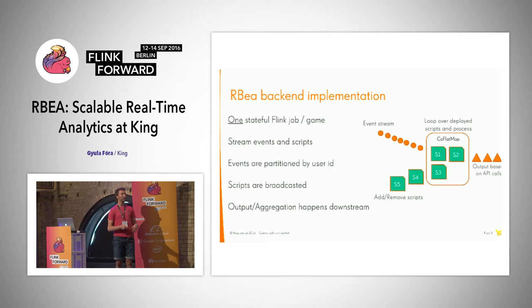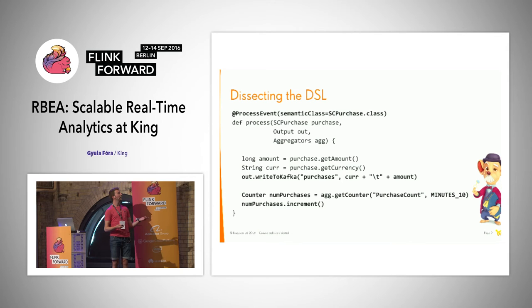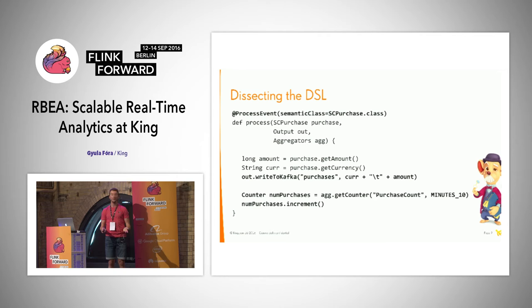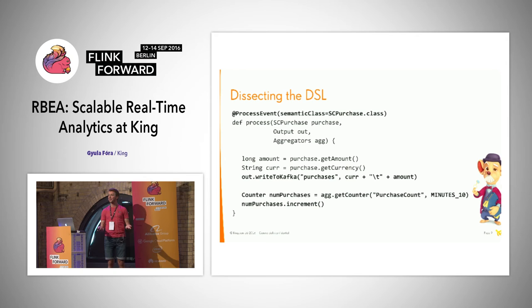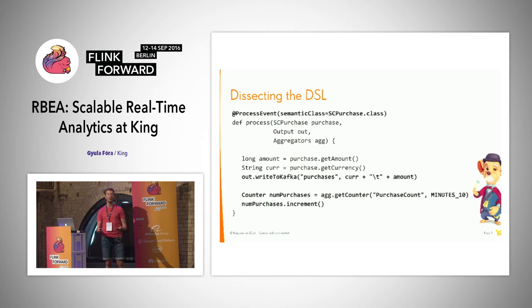Now let's look at the actual API and get some more insight about how the system works. Here we can see a very simple script in the Arbea DSL. In the simplest case, people need to define a processing method. What we do here is take purchase events, get the amount and the currency — so if you bought some gold bars in England, it would be some amount in pounds — and we want to write this currency and amount information to a dedicated Kafka topic called 'purchases'.